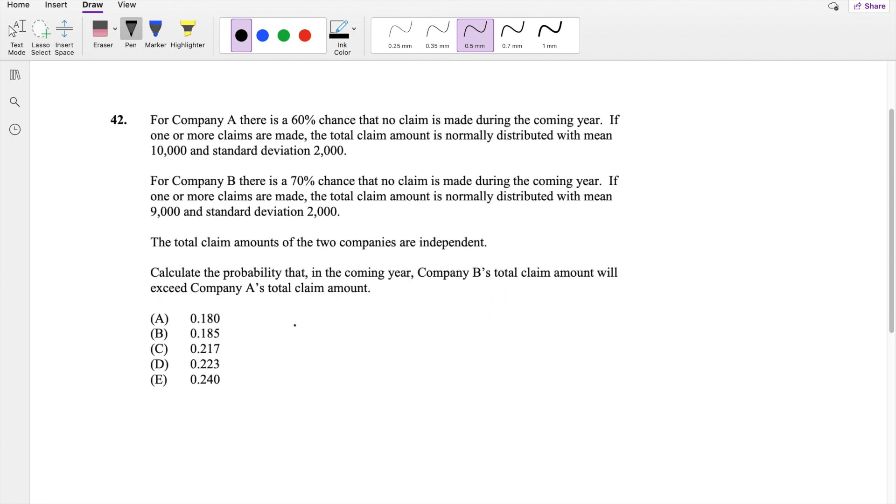So this question basically asks, calculate the probability that in the coming year, company B's total claim amount will exceed company A's total claim amount. So company B's total claim amount will exceed company A in two scenarios. If company A has zero claims and company B has one claim, or if both of them have a claim but B is greater than A.